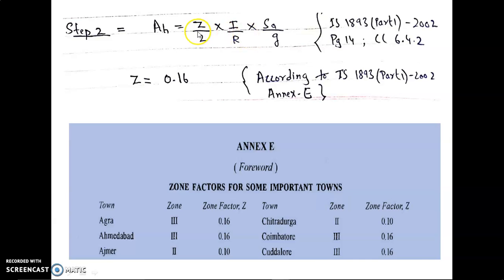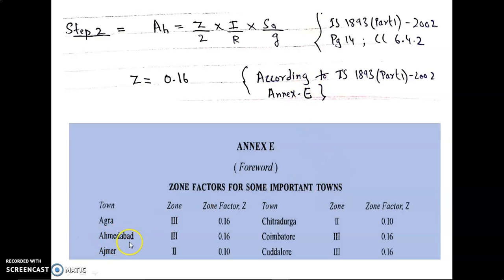Here Z is the zone factor. In our question it is already mentioned that this building is situated in Ahmedabad. For Ahmedabad, the zone factor value is 0.16, so here we take Z = 0.16.